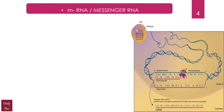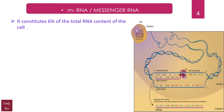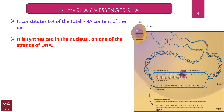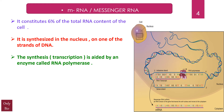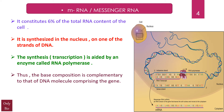Let's start understanding mRNA, that is messenger RNA. It constitutes six percent of the total RNA content of the cell — this is very important and is often asked in MCQs. It is synthesized in the nucleus on one of the strands of DNA. The synthesis, that is transcription, is aided by an enzyme called RNA polymerase. Thus the base composition is complementary to that of the DNA molecule comprising the gene, and from two DNA strands only one is utilized for the formation of mRNA.